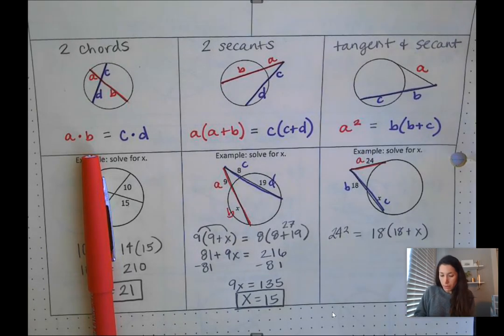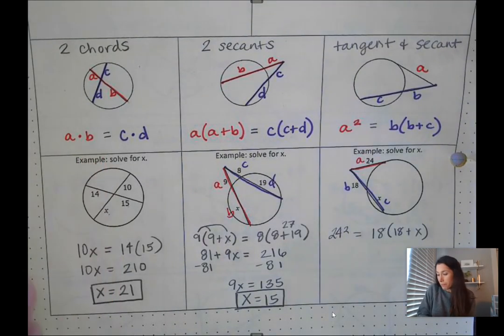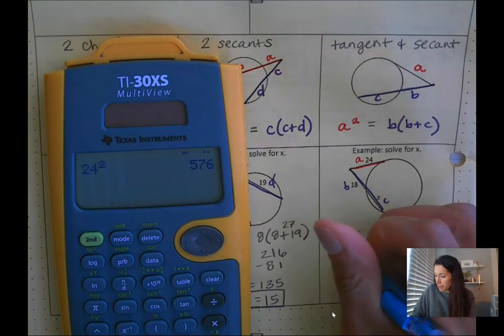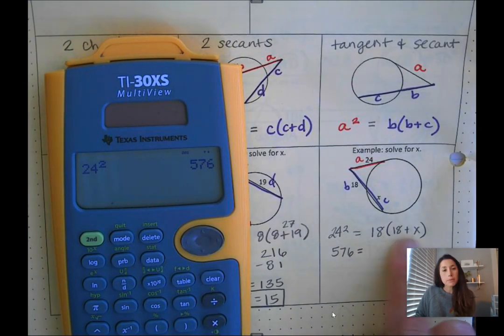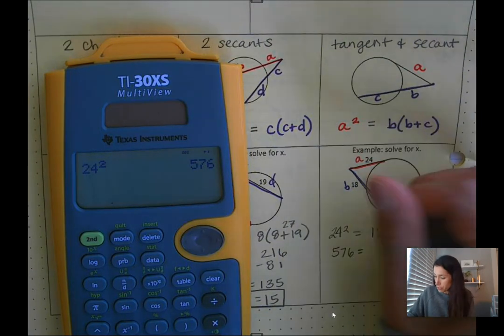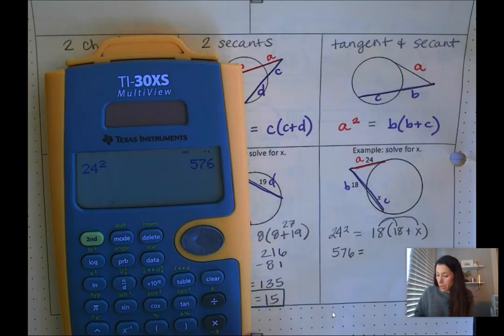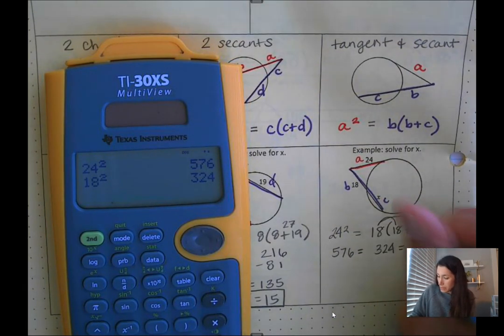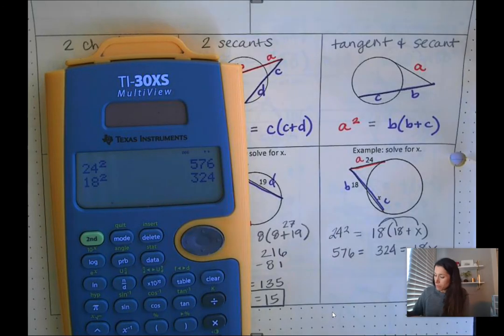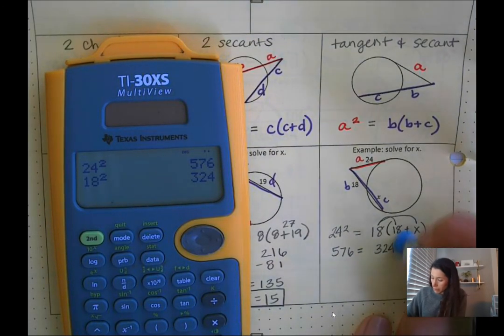On the left side we can square 24. That's going to be 576. And then we can't add 18 with X, so all we can do from here is distribute. So 18 times 18 or 18 squared is 324. 18 times X is just 18X.